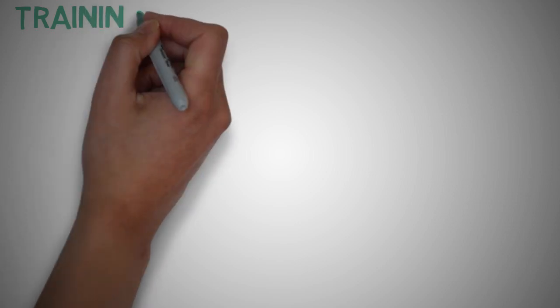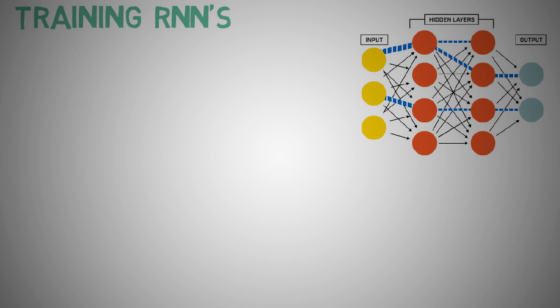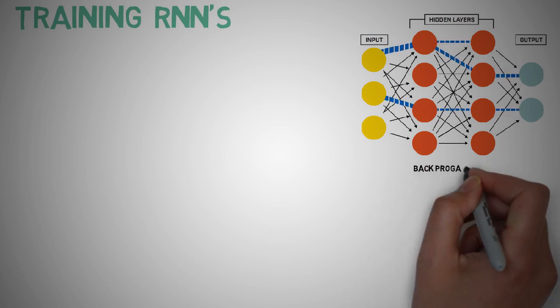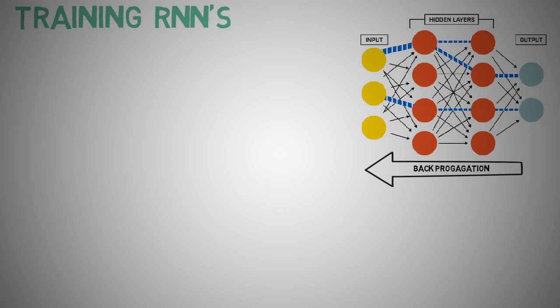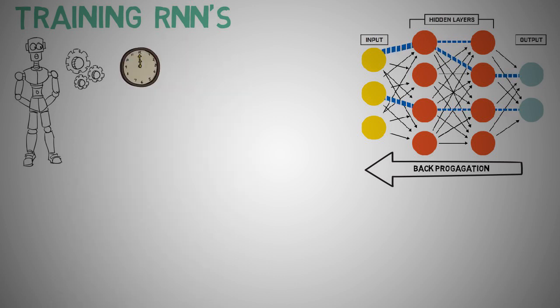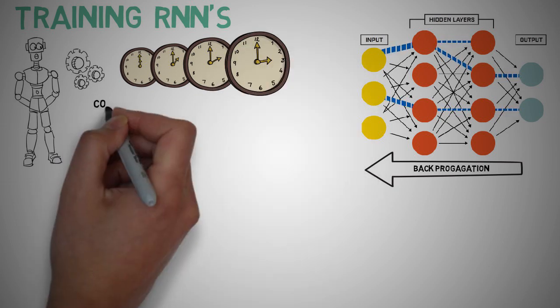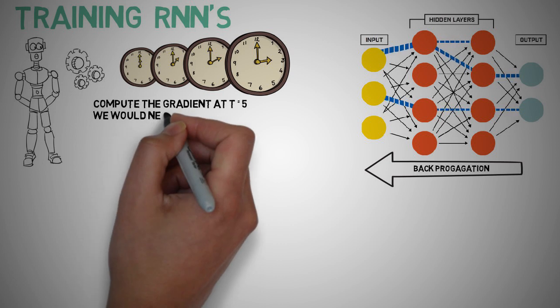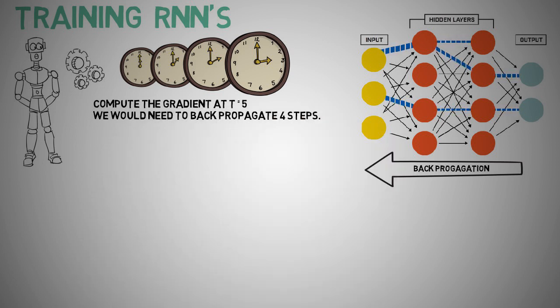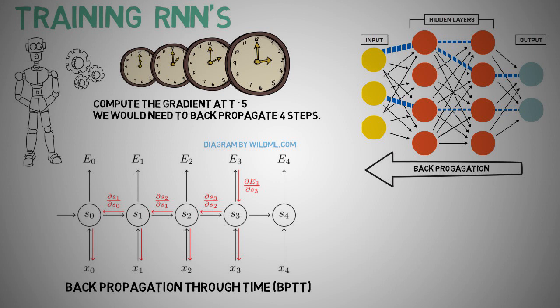Training RNNs. Training a recurrent neural network is similar to training a traditional artificial neural network, where we also use backpropagation algorithm, but with a few minor tweaks. Because the parameters are shared by all time steps in a network, the gradient at each output depends not only on the calculations of the current time step, but also on the previous time steps. If we look at an example, in order to compute the gradient at t equals 5, we would need to backpropagate 4 steps, and then sum up all the gradients. This is known as backpropagation through time, or BPTT.